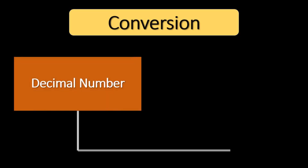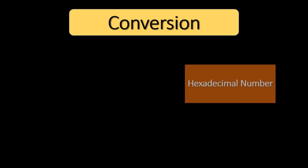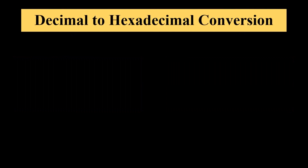Hello everyone, welcome to StudyTube. Today you will learn how to convert a decimal number into a hexadecimal number and how to convert a hexadecimal number into a decimal number. Let's start with decimal to hexadecimal conversion. You will understand this conversion technique with the help of an example. Here 2736.03125 is a decimal number and we have to convert this decimal number into a hexadecimal number.